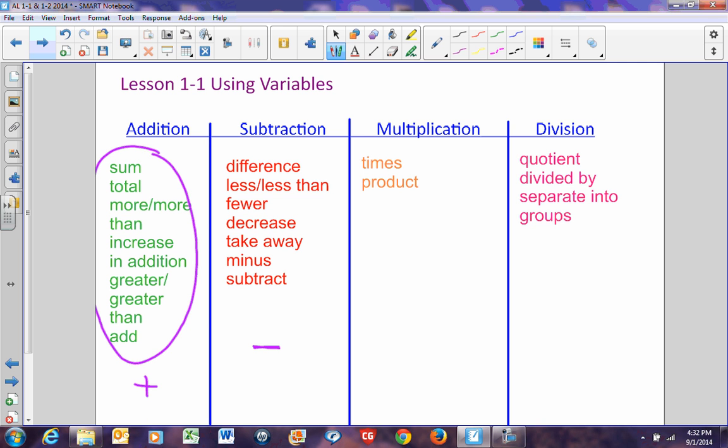When you multiply or divide, there are a lot less words to use. In multiplication, the most common ones are times, like two times, three times, four times, or product. Once in a while, you'll see the word of, which also implies multiplication. But be careful, sometimes it's just part of the sentence that is English and not related to math.